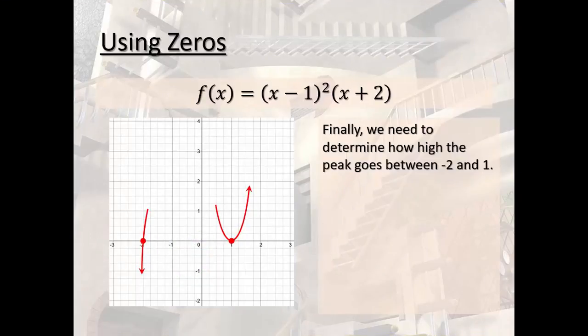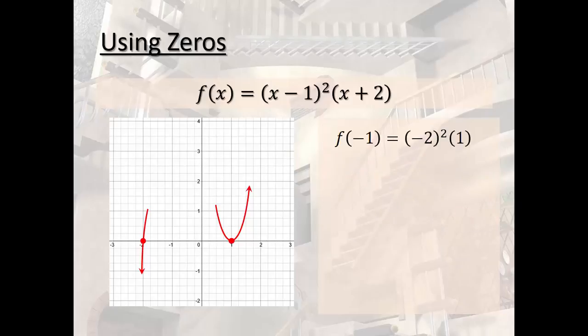All right. F of negative 1 ends up to be 4. All right. So we have a point up there. F of 0 happens to be 2. So we have a point right there.